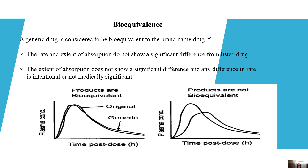Bioequivalence. A generic drug is considered to be bioequivalent to the brand name drug when the rate and extent of absorption of the drug do not show a significant difference from the listed or reference drug, or when the extent of absorption does not show a significant difference, or any difference in rate is intentional or not medically significant from the reference or listed drug.